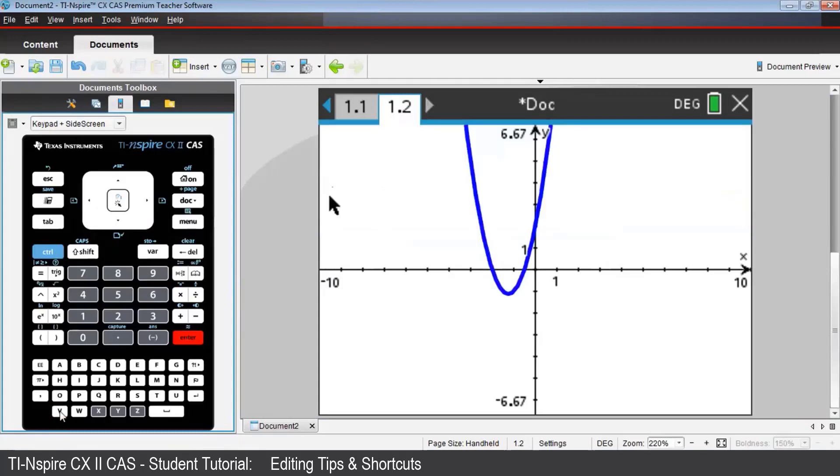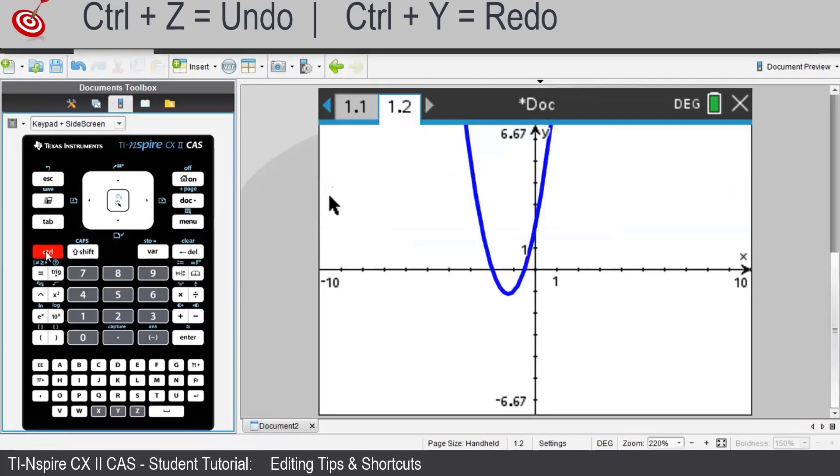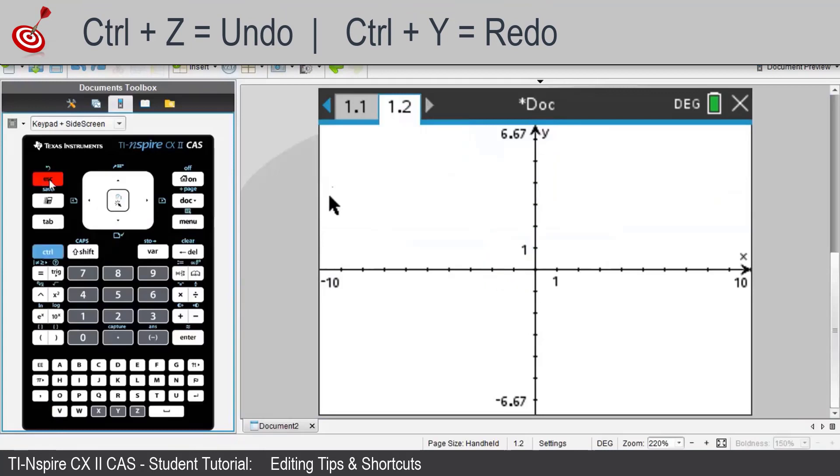Undoing and redoing are useful actions for using Inspire, when there's some doubt about an action you've just performed. To undo that graph entry, press Ctrl, then Escape. Now note the curved Undo arrow just above that key.